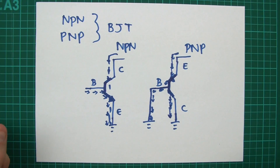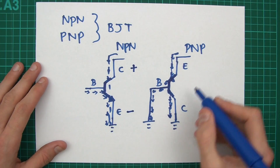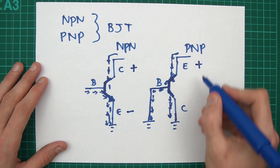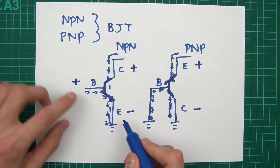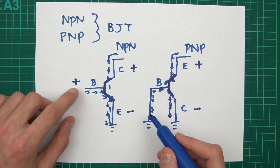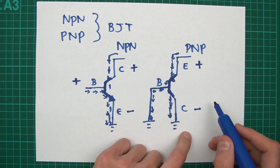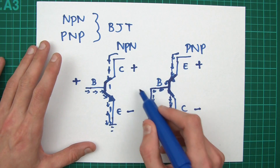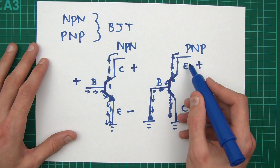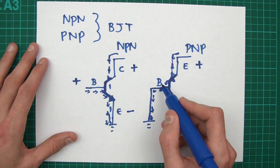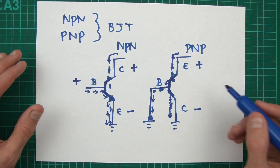To reiterate both types: on the NPN transistor, the collector is positive and the emitter is negative. On the PNP transistor, the emitter is positive and the collector is negative. To turn on the NPN, you give the base a positive current flowing from base to emitter and that switches it on. On the PNP, you give the base a minus — connect the base to ground, which is lower than the emitter voltage — and that allows current to flow, switching the PNP transistor on.